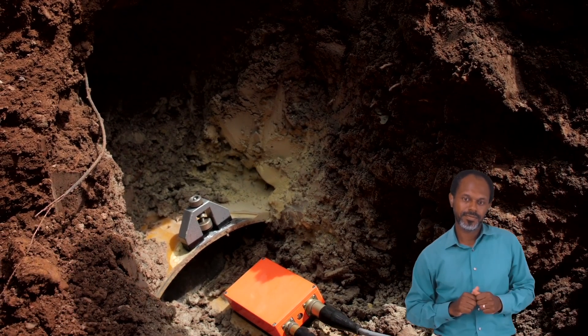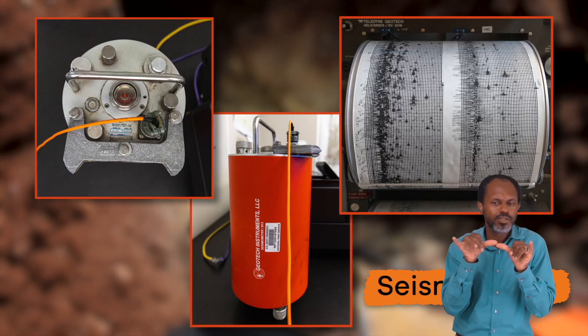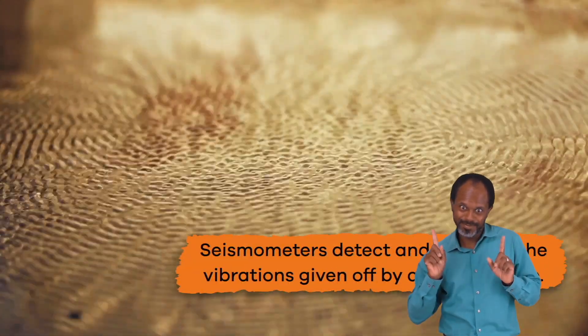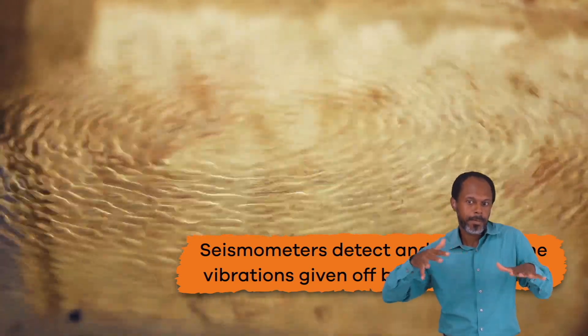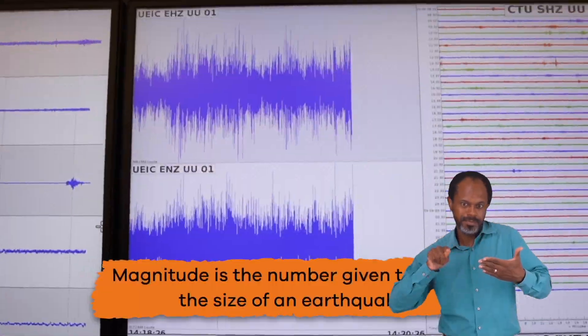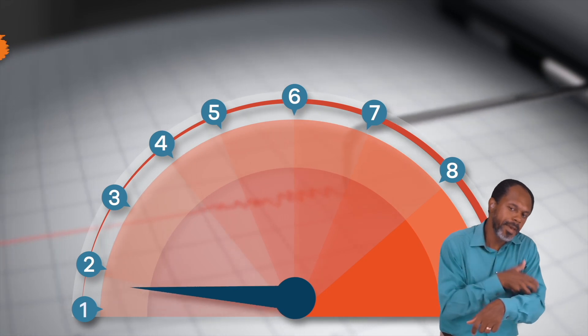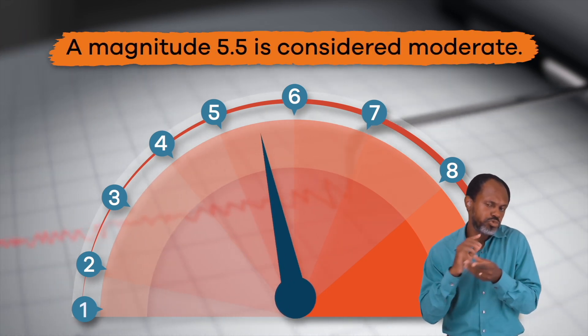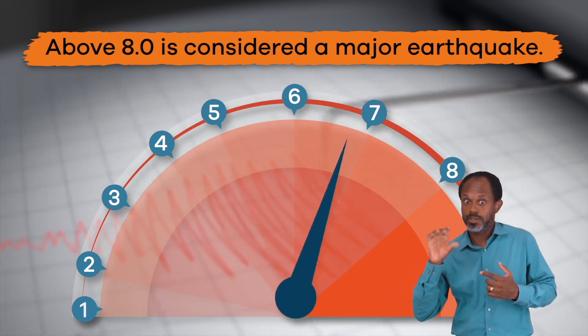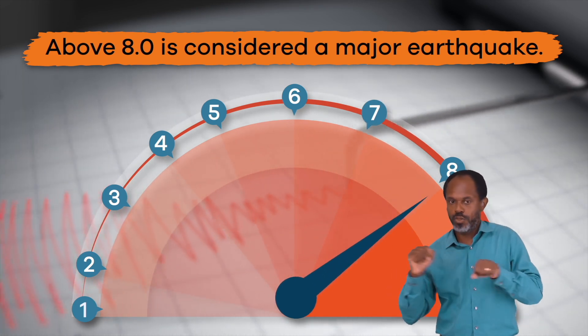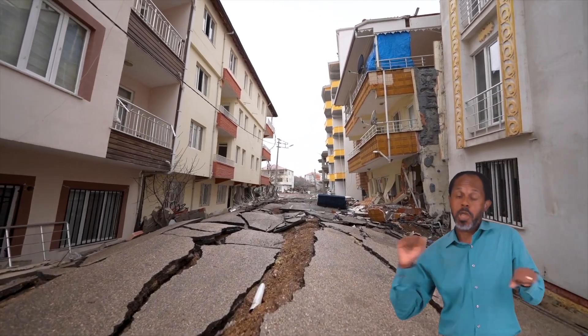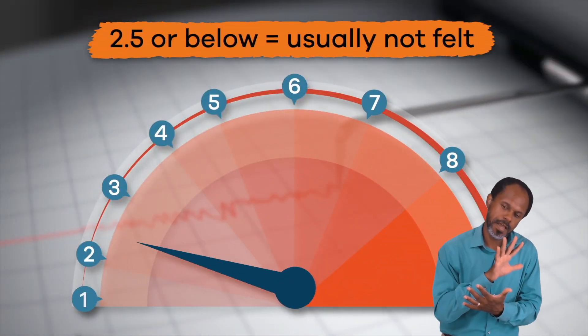Scientists measure the intensity of an earthquake using a special device called a seismograph. Seismometers detect and measure the vibrations given off by an earthquake. Magnitude is the number given to record the size of an earthquake. For example, a magnitude 5.5 is considered moderate. Above 8.0 is considered a major earthquake and we see one every year or two. Earthquakes measured at 2.5 or less are usually not felt but can be recorded, and believe it or not, there are millions that happen each year.